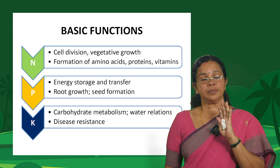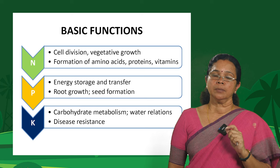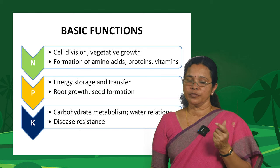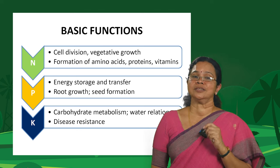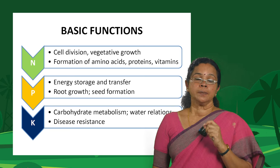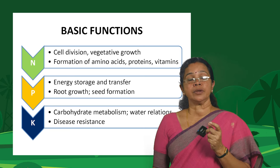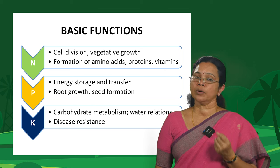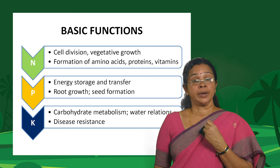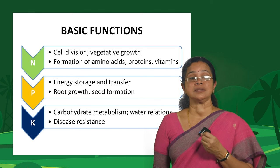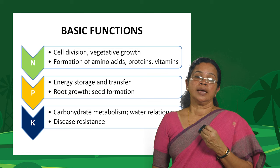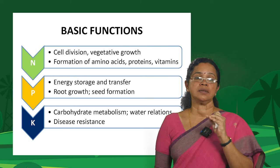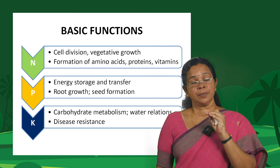Coming to the third primary nutrient, potassium is also known as the soldier nutrient. Soldiers guard the country; similarly, potassium protects plants from different types of stresses — moisture stress, biotic stresses such as insect pests and diseases. Similarly, potassium is involved in carbohydrate metabolism. These are the basic functions of the three primary nutrients.